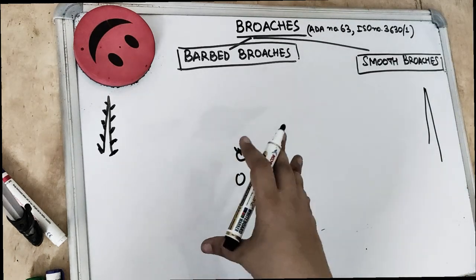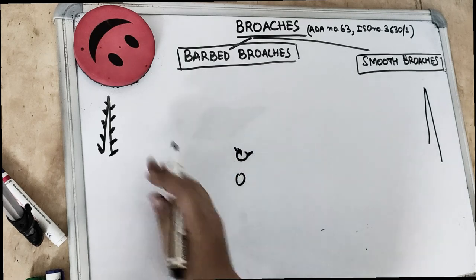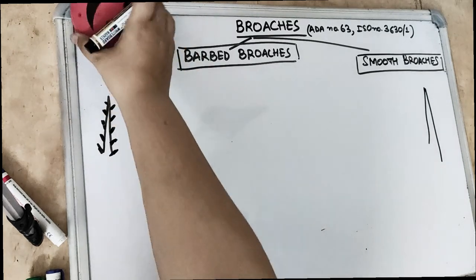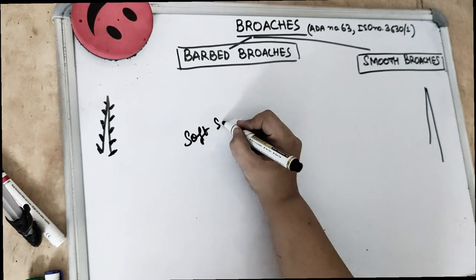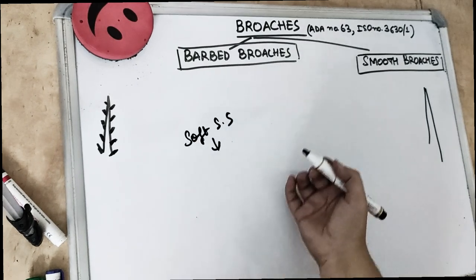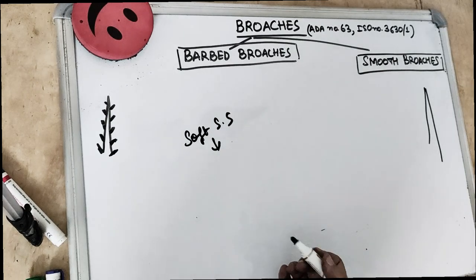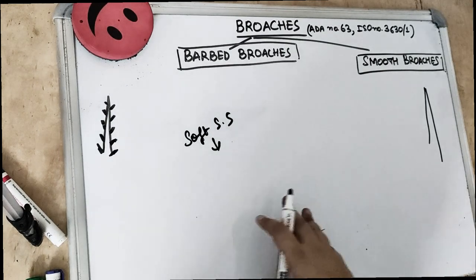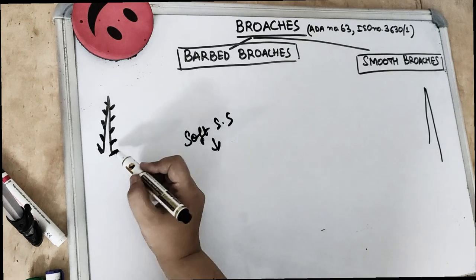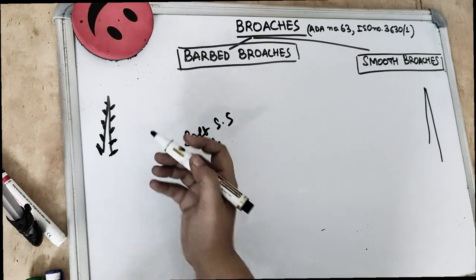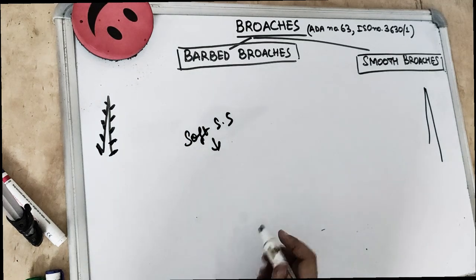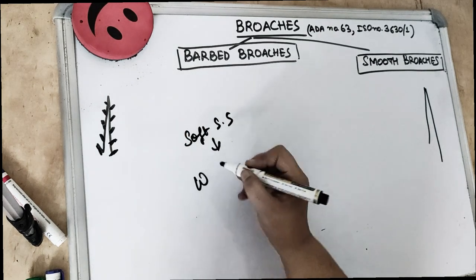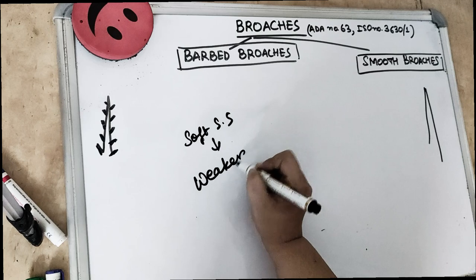Now these barbed broaches, because they are made from a round soft stainless steel wire, they are prone to fracture. They are easily prone to fracture. And the smooth surface are notched to form the barbs. So these smooth surfaces are notched to form these spikes or barbs, and that is making this barb weaker than any file.